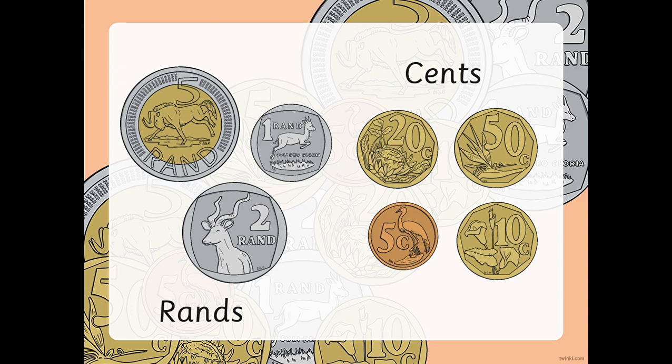We're just going to go over a few things verbally and then I will tell you when we are going to start writing. On the left-hand side of your screen you can see there are three silver coins: we've got a 5 rand coin, a 1 rand coin, and a 2 rand coin. Then on the right-hand side of your screen we've got a 20 cent coin, a 50 cent coin, a 5 cent coin, and a 10 cent coin.